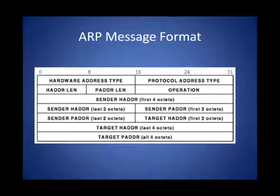ARP is one of the simplest protocols you'll ever study. It has only two messages defined: an ARP request and an ARP reply. The way it works is you send out an ARP request indicating that you know the IP address but you're looking for the MAC address so you can build an Ethernet frame.